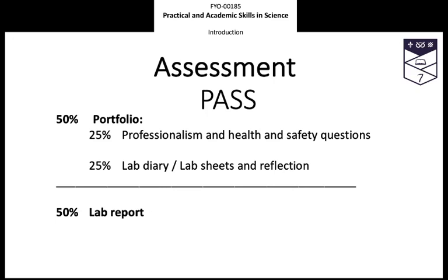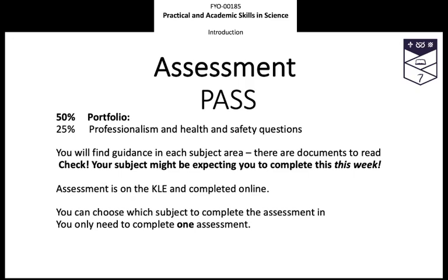Here's an overview of the assessment for the PASS module. There are essentially two sides to the assessment. About two-thirds to three-quarters of the way through, you'll be handing in a portfolio, and at the end you'll be handing in a lab report or a report on a scientific investigation. The portfolio is 50% of the total, and that's also split into two sections: there is a set of professionalism and health and safety questions, and there is a lab diary or lab sheets and a reflection.